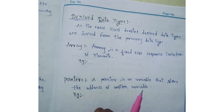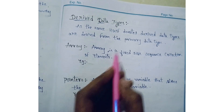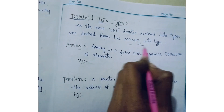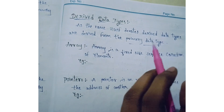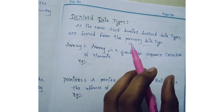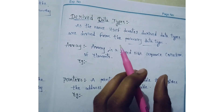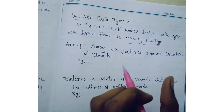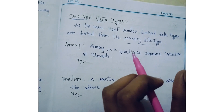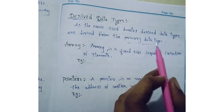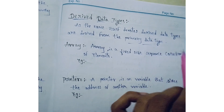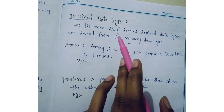Primary data types are int, char, float, and others. Now we will be learning about derived data types.